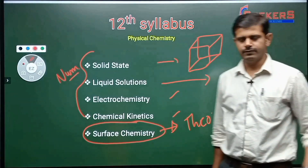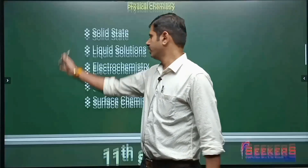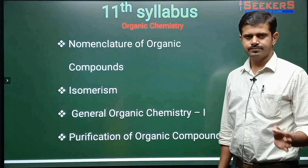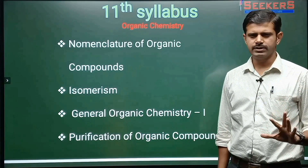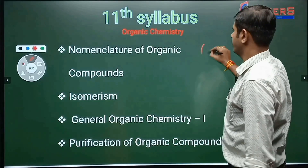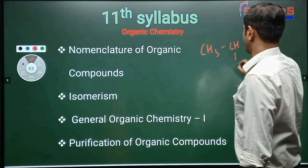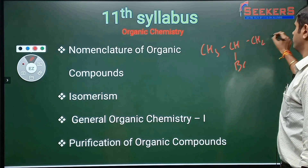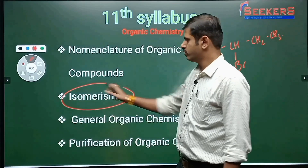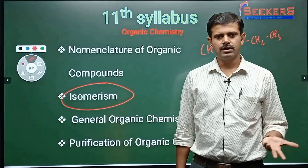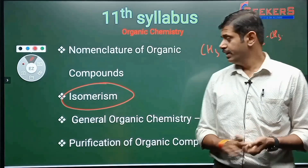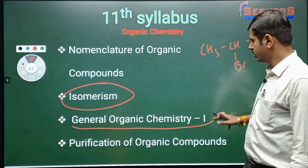Now we'll move to organic chemistry. For 11th organic chemistry, the first chapter is nomenclature — every two or three years one question comes on nomenclature and it is very easy. For example, they can give a compound like CH3-CH(Br)-CH2-CH3 and ask its name. Then comes isomerism — structural isomerism, stereo isomerism, optical isomerism, etc.